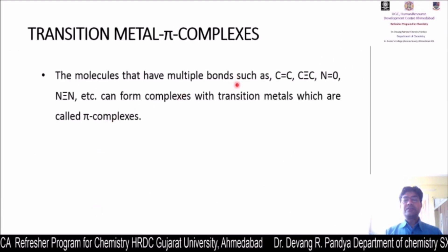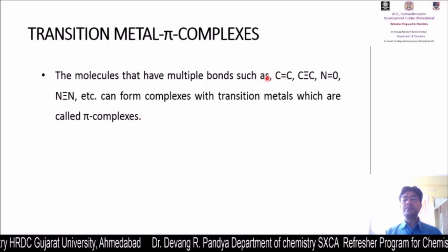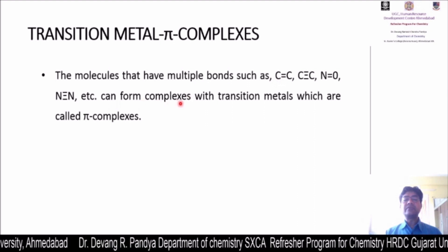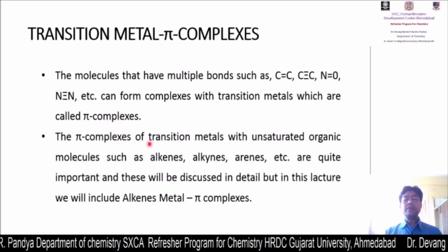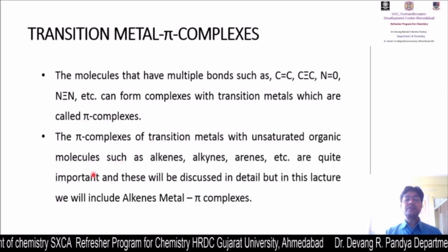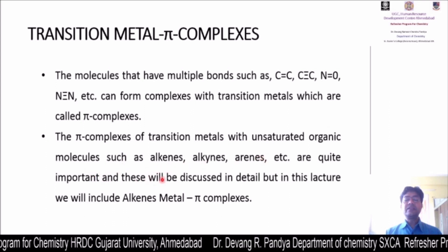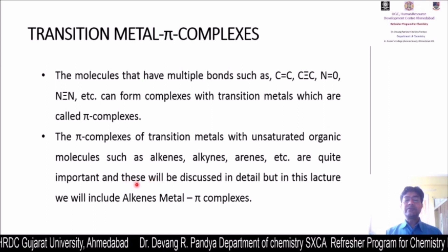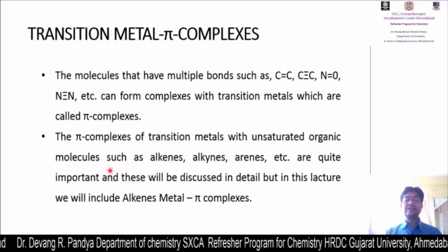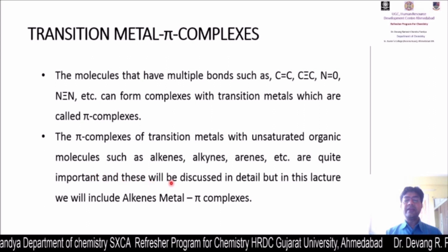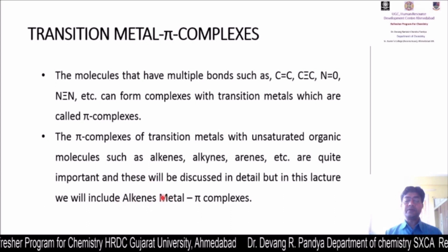Molecules that have multiple bonds, whether organic or inorganic, can interact with metals to form transition metal pi complexes. Pi complexes of transition metals with unsaturated organic molecules such as alkenes, alkynes, and arenes are quite important - they have beautiful chemistry and significant applications in catalysis. In this lecture we will include only metal alkene pi complexes.